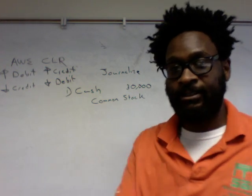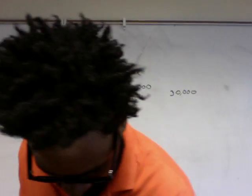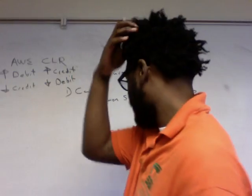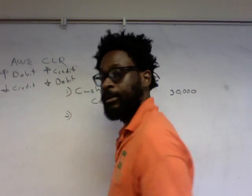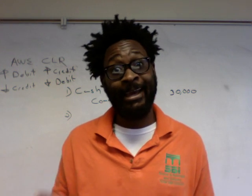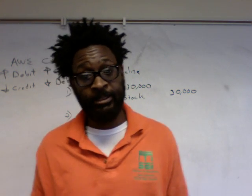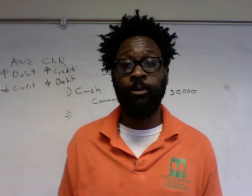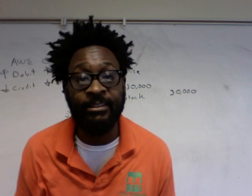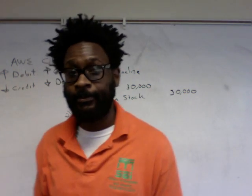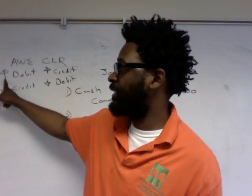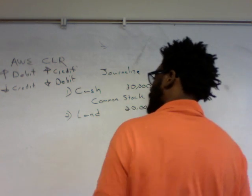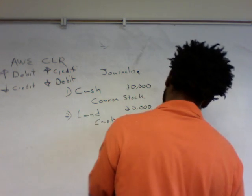The next transaction: purchase land for cash, $20,000. What are the keywords? Purchasing, land, cash. Land is an asset and it's going up — we received land. Cash is an asset and it's going down — we paid cash for land. Which one do we debit? Land, because land is an asset going up, so we debit land for $20,000. We then credit cash for $20,000. All of this goes into our journal entry.